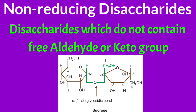An example of a non-reducing disaccharide is sucrose. You can see its structure here — it is composed of glucose and fructose, with the left monosaccharide being glucose and the right being fructose. The bond is formed between the first carbon of glucose and the second carbon of fructose. The first carbon of glucose has the aldehyde functional group, and fructose has its functional group on the second carbon. During glycosidic bond formation, both functional groups are involved, so after bond formation sucrose does not contain any free functional group — that is why it is called a non-reducing sugar.